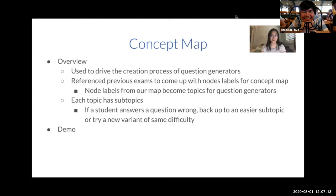This map is built by referencing previous exam materials and adding commonly tested concepts as nodes. We then take these concepts from the map and turn them into topics for our question generators. Each big topic sourced from the exams will also have subtopics that break that topic down into simpler ideas. This allows students to either back up to an easier subtopic or try a new variant of the same question when they answer incorrectly.